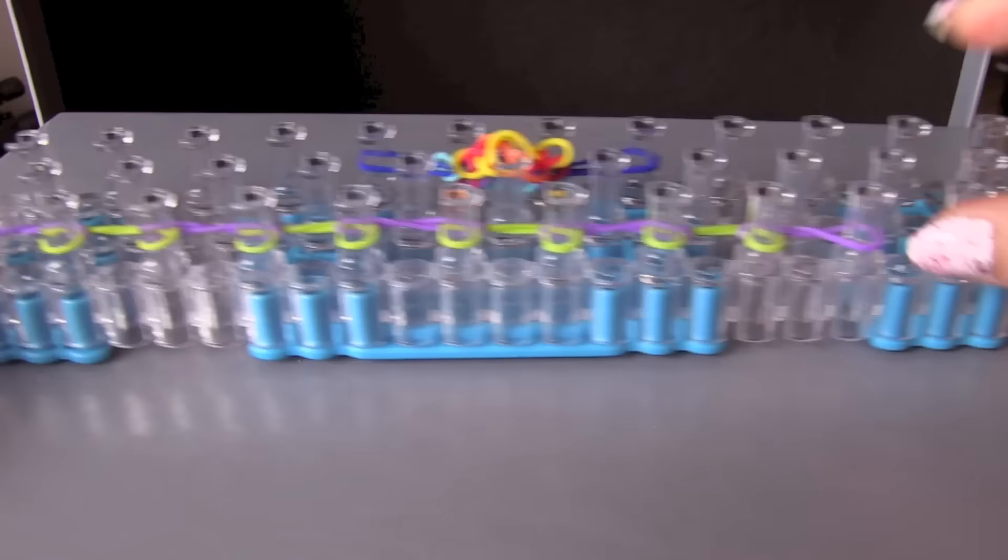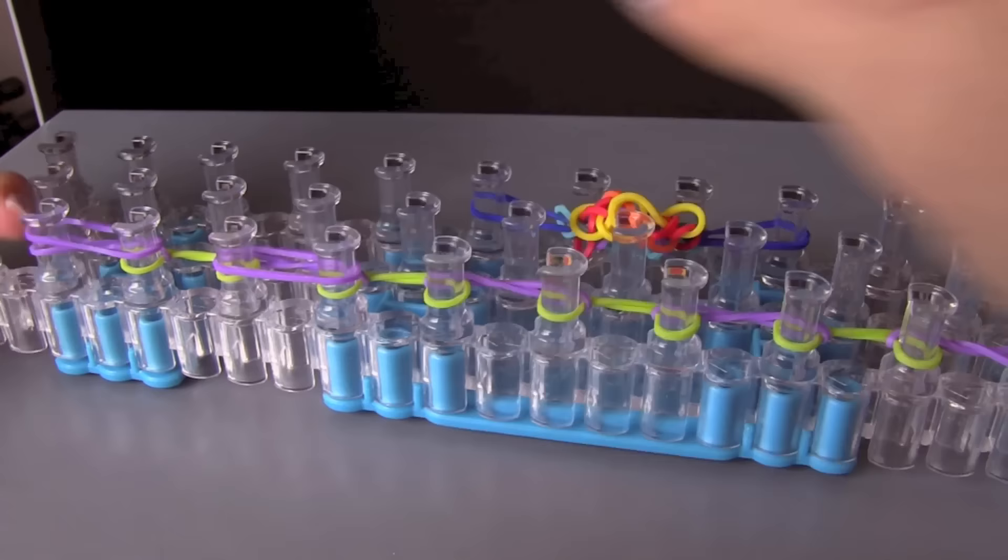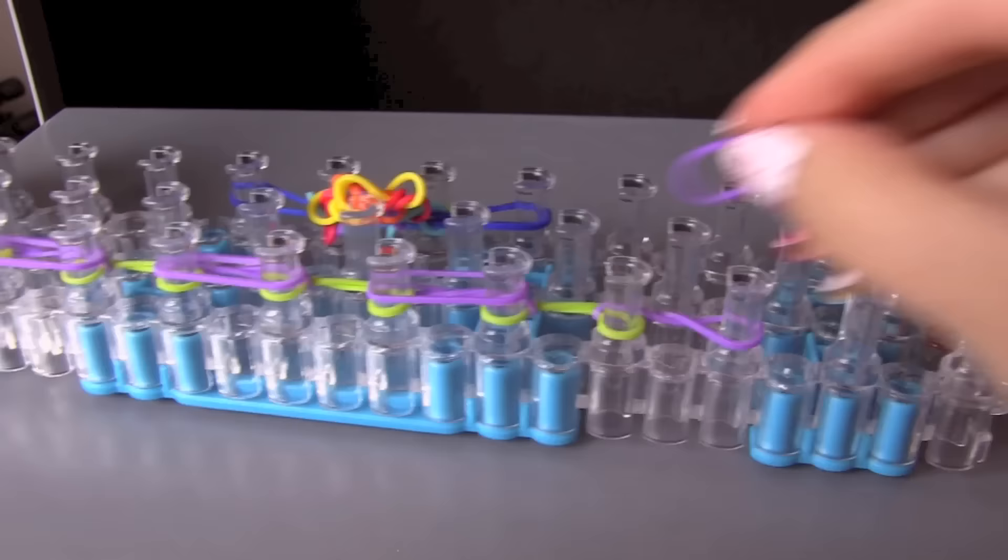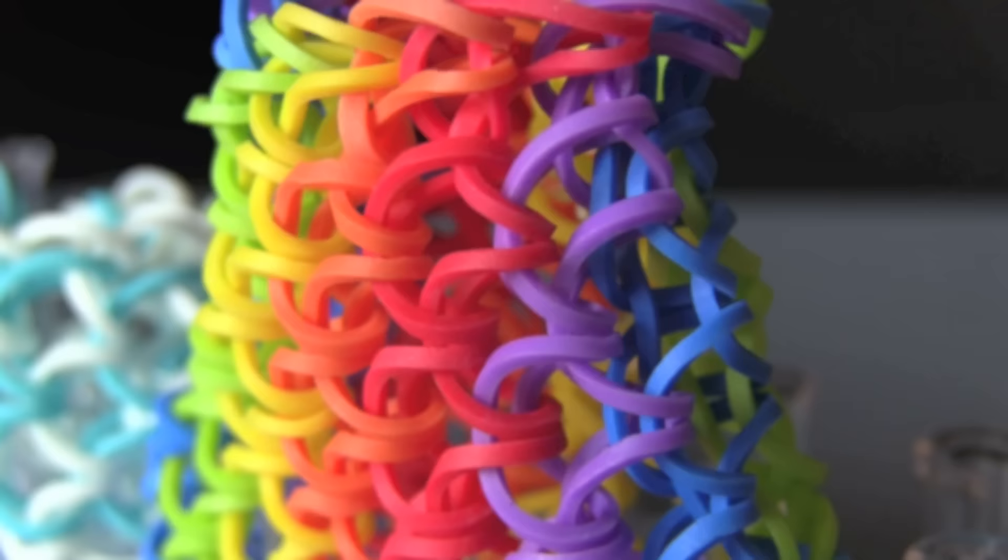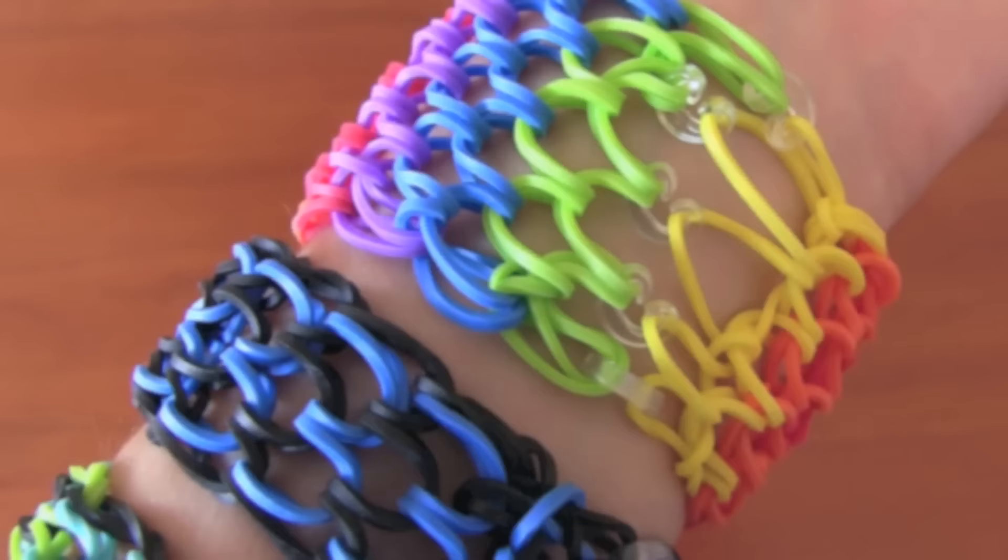And then I am going to take 5 purple bands again and put them on normally on the pegs right above where the other purple ones were. And I am going to take the bottom band from every single peg and pull those over the top bands to make the dragon scale cuff stitch. And that is all.